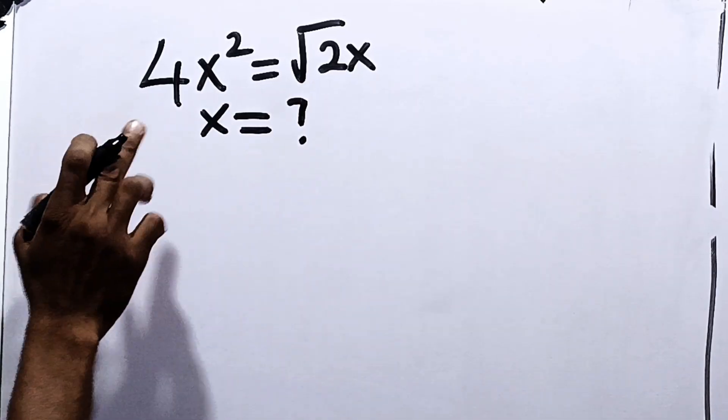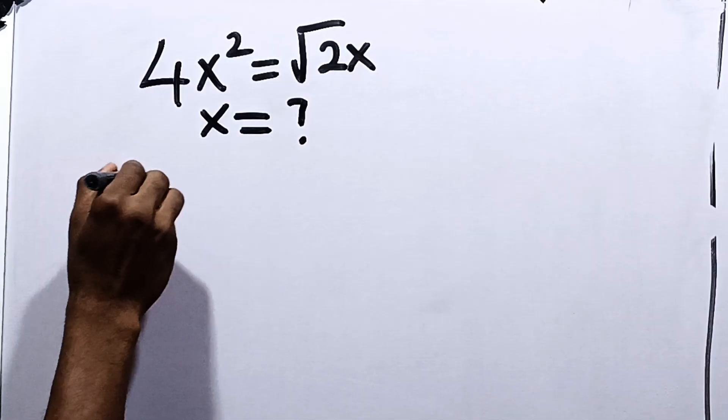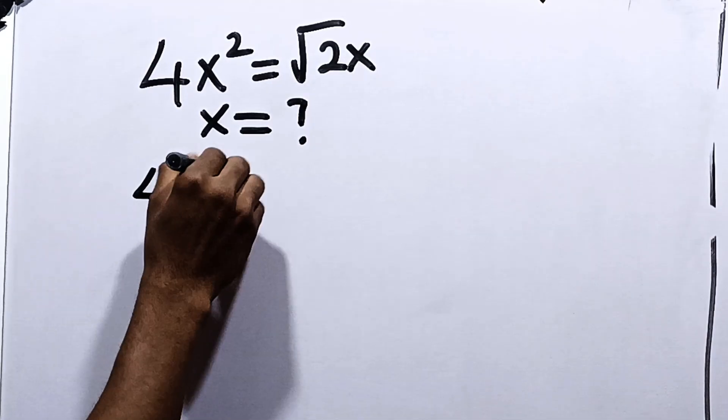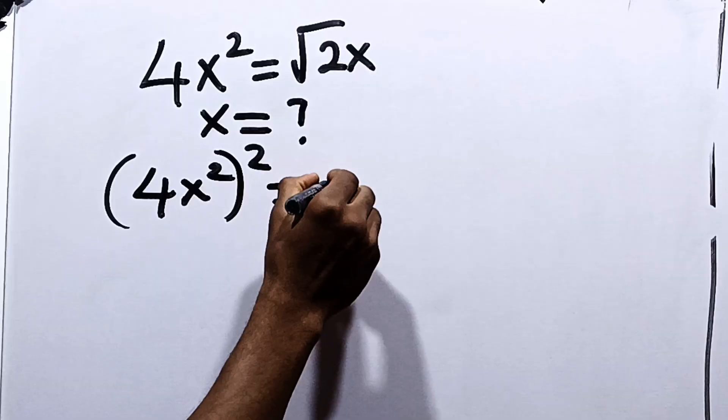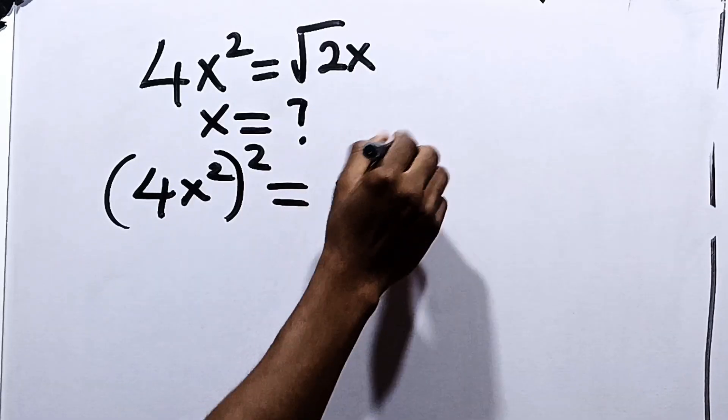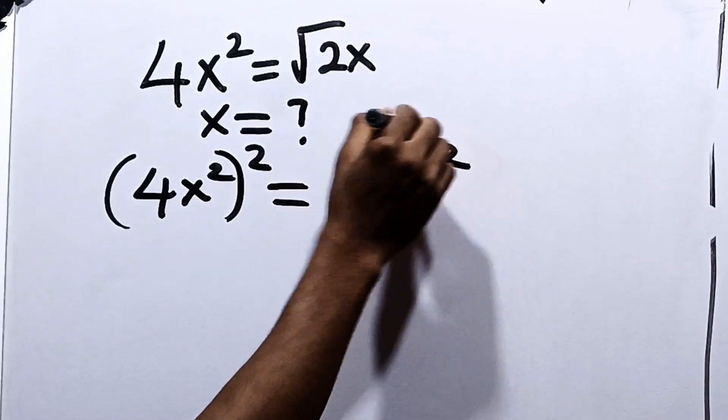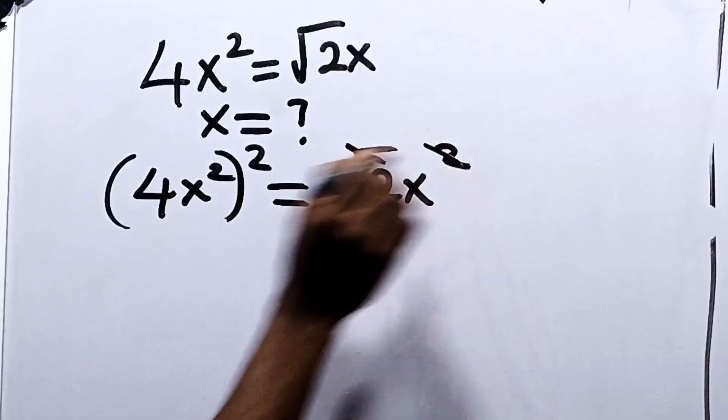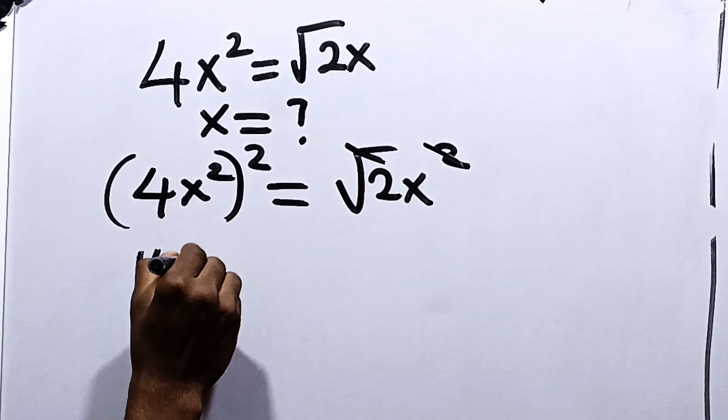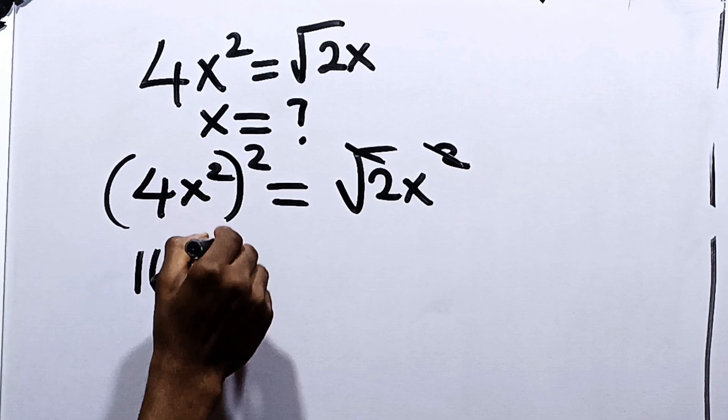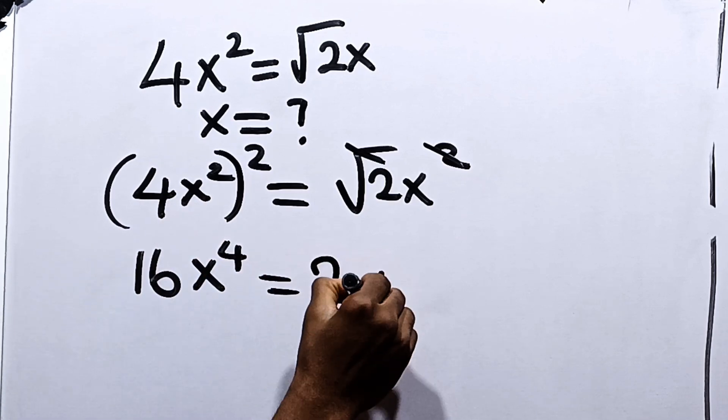Now, first things first, let's square both sides. So, we have 4x squared squared to be equal to root of 2x squared. Square root cancels square so that we are left with it. 4 squared is 16 and x squared squared is x to the power of 4 to be equal to 2x.